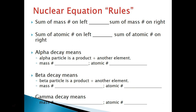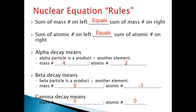General rules for nuclear equations: the sum of mass numbers on the left must equal the sum on the right, and the sum of atomic numbers on the left must equal the sum on the right. Alpha decay produces an alpha particle (mass 4, atomic number 2). Beta decay produces a beta particle (mass 0, atomic number −1). Gamma decay means the radioisotope emits gamma radiation, losing 0 mass and 0 atomic number.